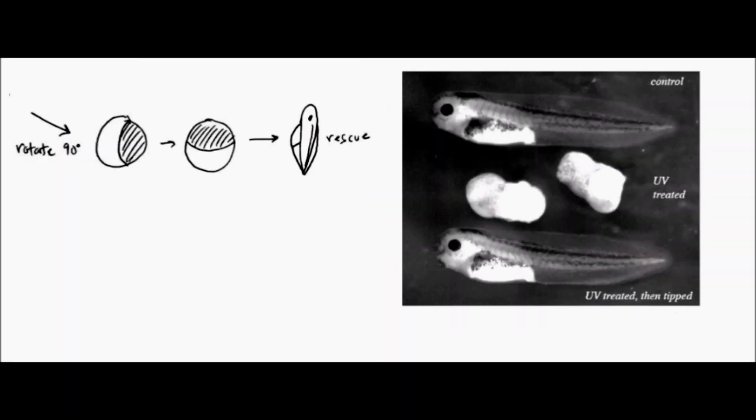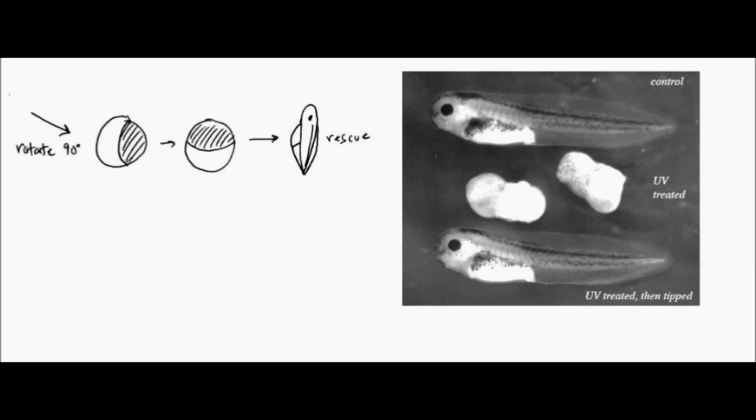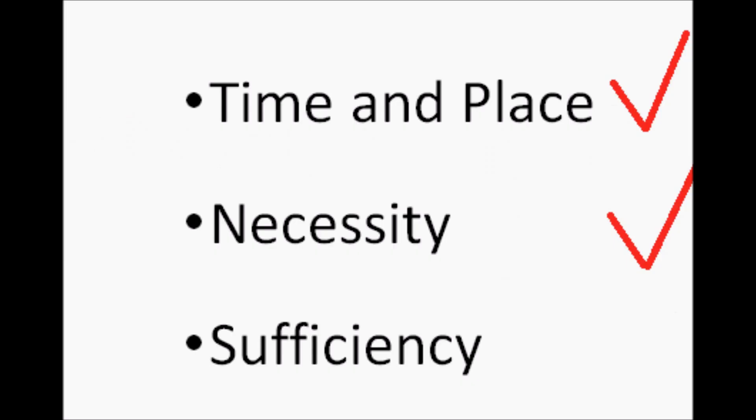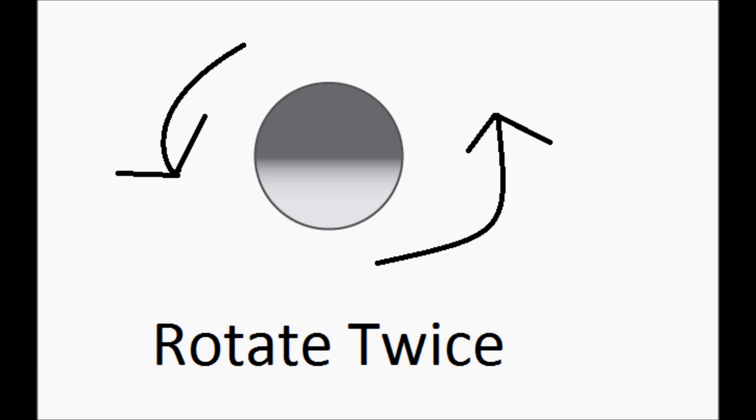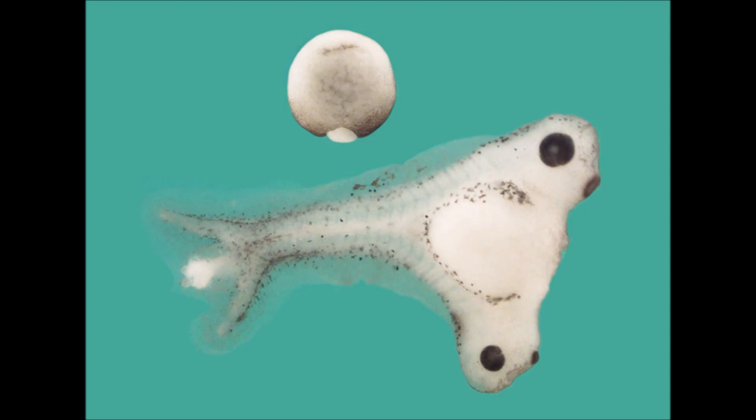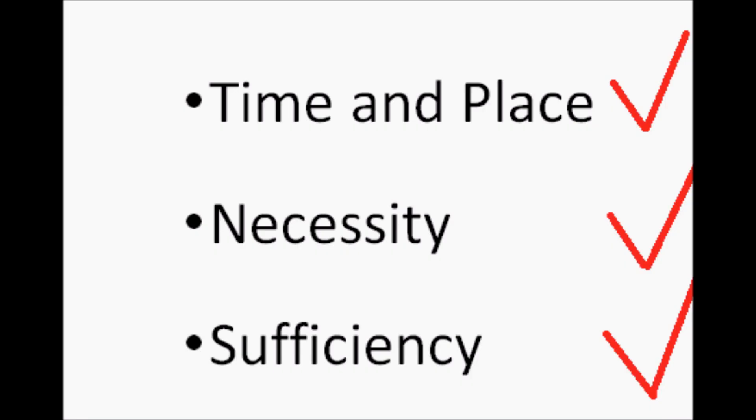For this, a rescue can be performed by manually rotating the egg 90 degrees and this allows the yolk to move back. This will result in dorsalization of the embryo. To show sufficiency, the egg can be rotated twice in a row. This results in a conjoined twin embryo showing dorsalization in an ectopic location.